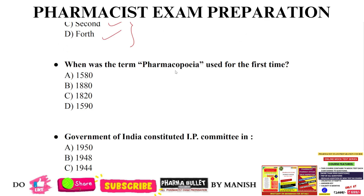When was the term Pharmacopeia used for the first time? We already discussed this. The term Pharmacopeia was used for the first time in 1580 — option A is the correct answer.